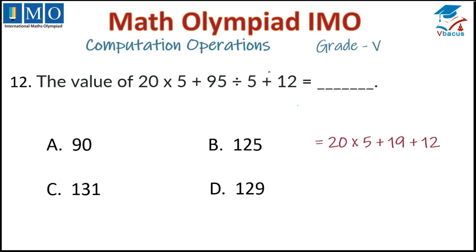According to BODMAS rule, we have to do division first. If we divide 95 by 5 you will get 19. Then you have to multiply 20 by 5, it will be 100. So 20 times 5 equals 100, then 100 plus 19 plus 12, you will get 131.